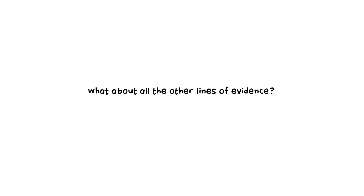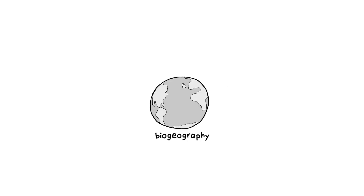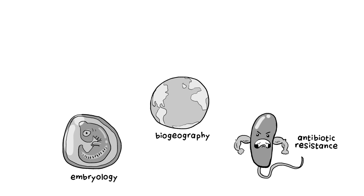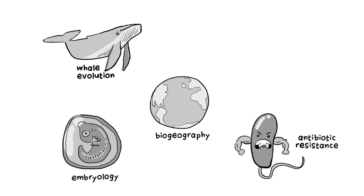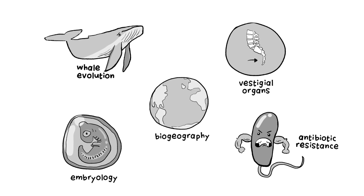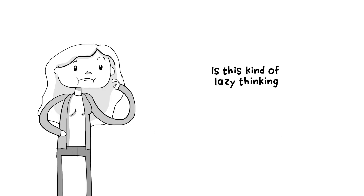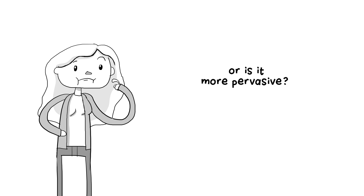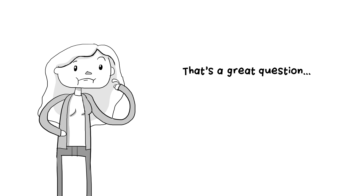But what about all the other lines of evidence? We've got biogeography, embryology, antibiotic resistance, whale evolution, even vestigial organs for crying out loud. Is this kind of lazy thinking when dealing with evidence for evolution a one-off mistake in biology, or is it more pervasive? That's a great question for another video.